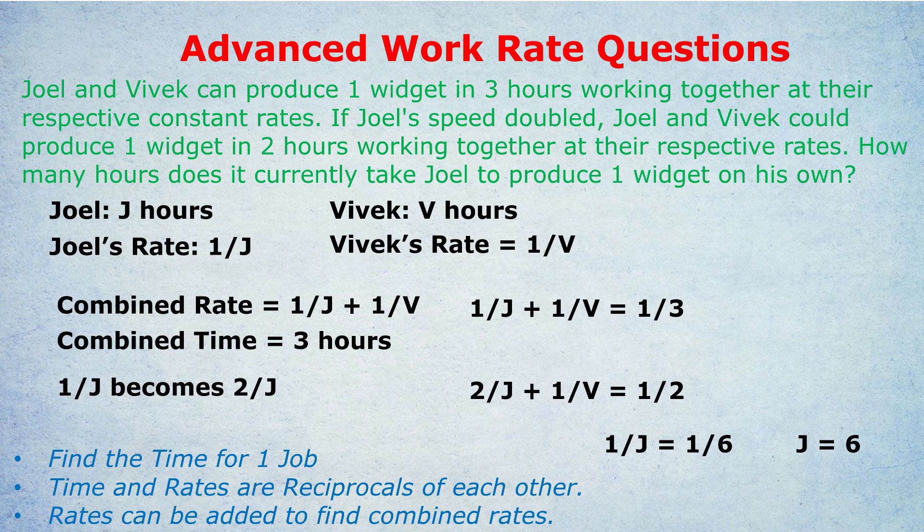Did you notice what was in common between all three questions? It was always the same method: write down the time — whether a number or a letter — do the reciprocal to find the rate, add the rates, and do the reciprocal of the combined rate to find the combined time. Sometimes we had to create equations where we knew the combined result but not individual ingredients. There were just tiny variations: here the speed was doubled, in the last question we found a fraction. But the method was always the same. If you enjoyed that, please leave a like and a comment — I read almost all of them, and I'll see you in the next video.